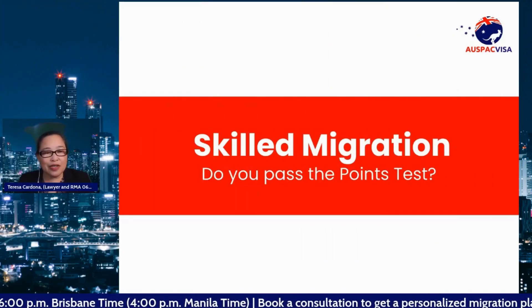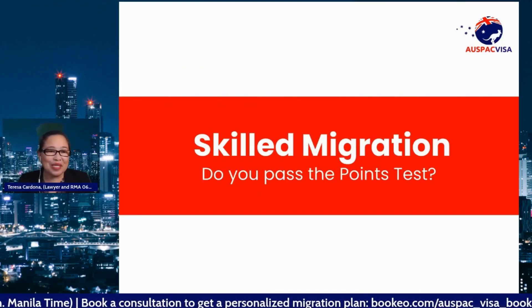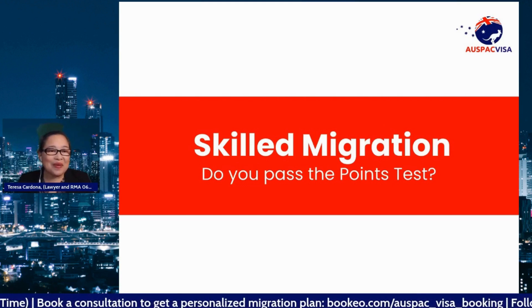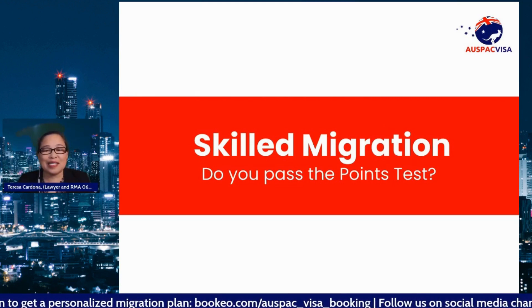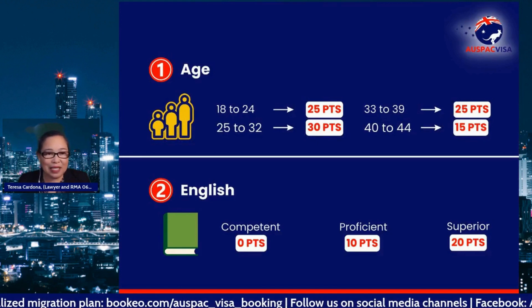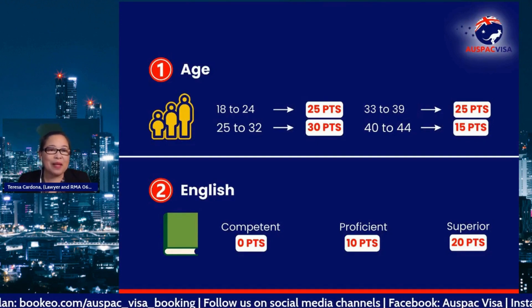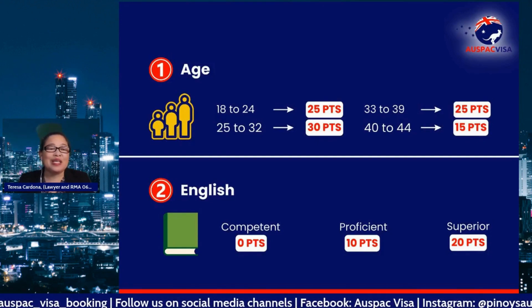For skilled migration, the basic question is: do you pass the points test? So we're going to discuss this. The pass mark is 65 points.